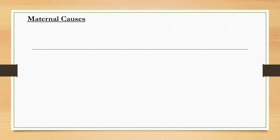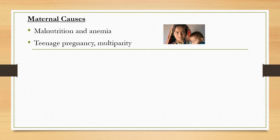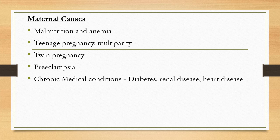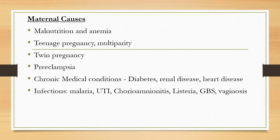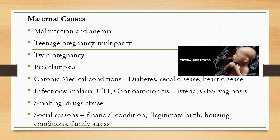Maternal factors leading to prematurity include malnutrition, anemia, teenage pregnancy, multiparity, twin pregnancy, preeclampsia, chronic conditions like diabetes, renal disease, and heart disease. Infections are very common in our setting — malaria, urinary tract infections, vaginosis, chorioamnionitis — all can lead to premature birth. Smoking and drug abuse are implicated in both prematurity and IUGR. Social reasons such as financial conditions, illegitimate birth, housing conditions, single-parent status, and family stress also play a role.